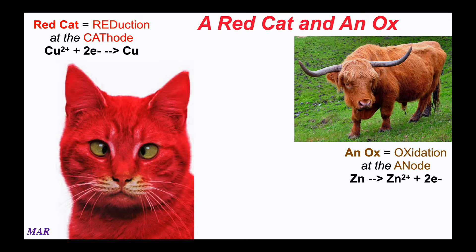If you don't like the consonants and vowels trick, perhaps I can interest you in 'red cat' — reduction at the cathode. So copper two plus going to copper is where the reduction is — it's the cathode. Maybe you like 'an ox' — oxidation at the anode. So 'red cat' and 'an ox' is a common mnemonic. Anything you want to use is totally cool.